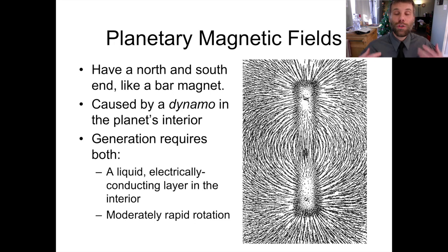In order to generate this dynamo, we need two important features in the planet's interior. First, we need some sort of liquid electrically conducting layer inside the planet. And second, that planet needs to have at least moderately rapid rotation. It can't be rotating super slowly. If it does do that, it's not going to generate a magnetic field.